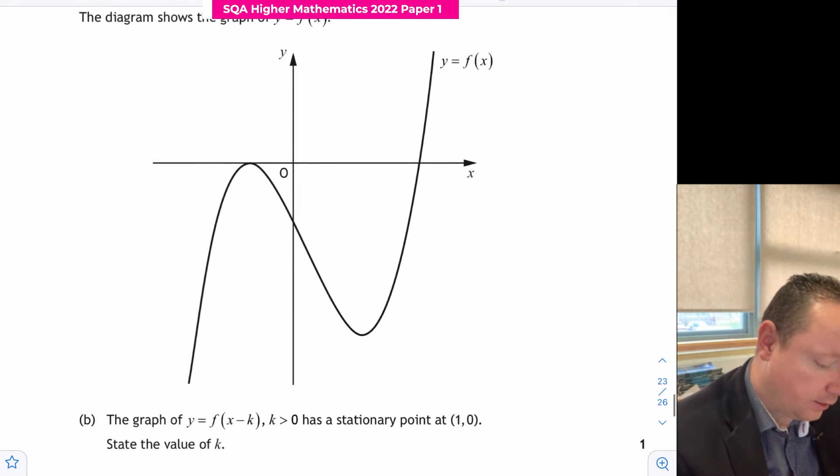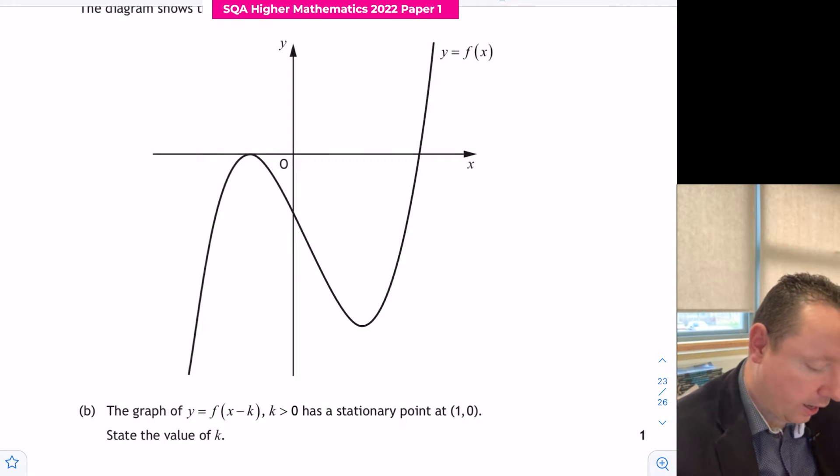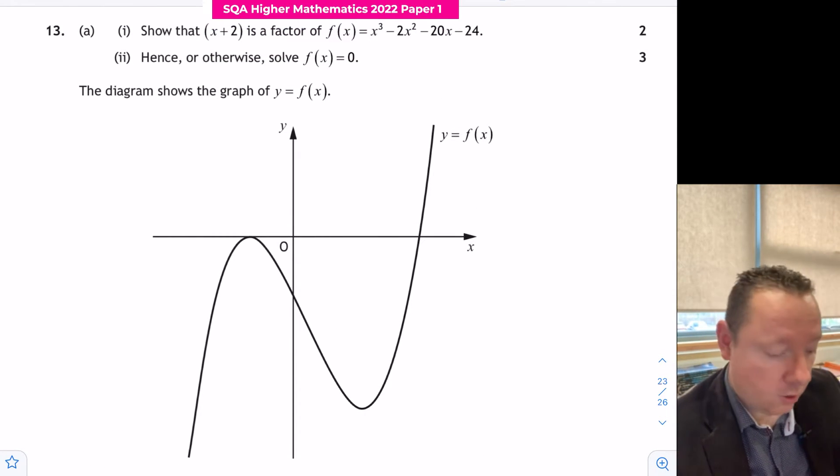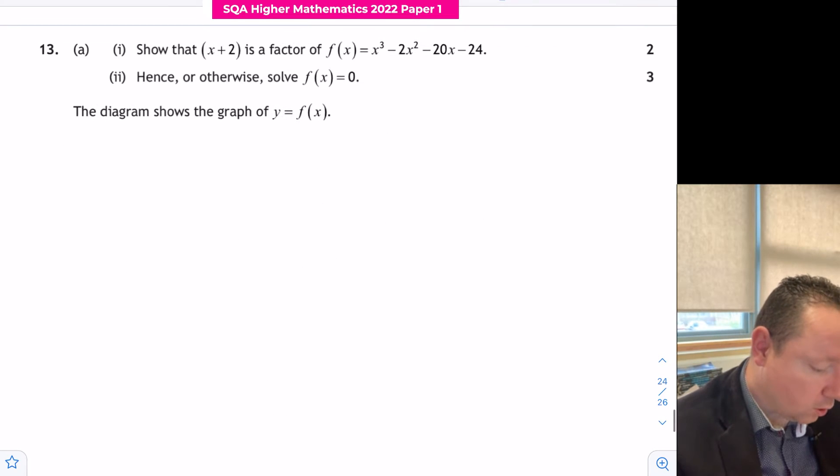Then it shows you a graph of f of x and tells you that f of x minus k, where k is greater than 0, has a stationary point at (1, 0). State the value of k. We'll get to that in a bit, but let's start by showing the factor of a cubic.